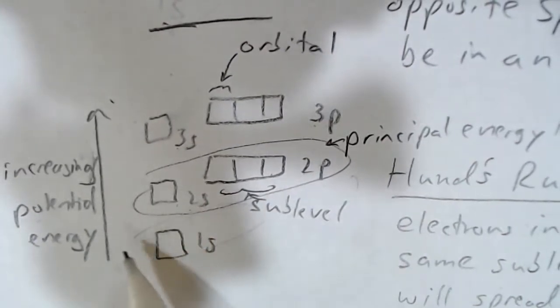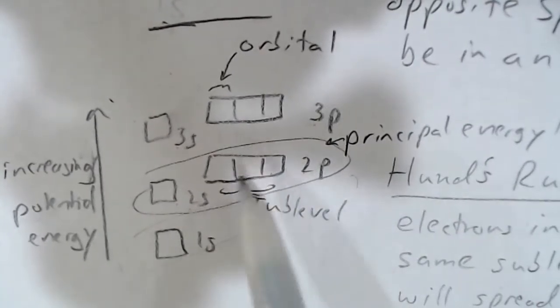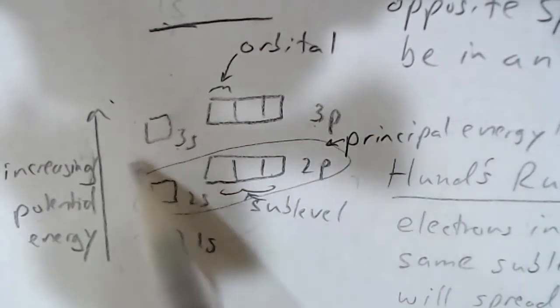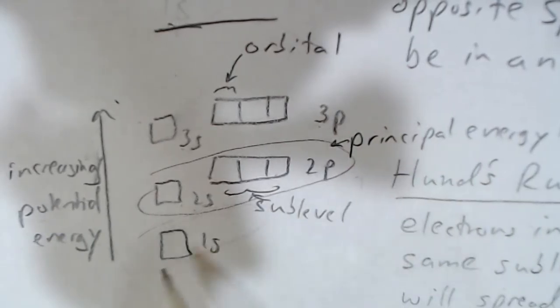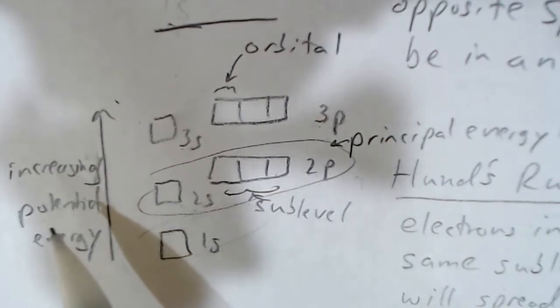Electrons can be in different principal energy levels around the nucleus. The lower principal energy levels, like principal energy level 1, will be closer to the nucleus, and the higher principal energy levels, like principal energy level 2 and 3, are further from the nucleus. As they get further from the nucleus, they have increasing potential energy.